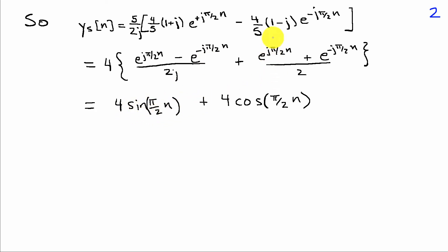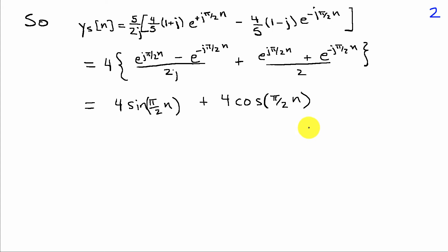Combining the imaginary terms, the j's cancel the j in the denominator, and we end up with (e^(jπ/2 n) + e^(-jπ/2 n)) / 2, which is just cos(π/2 n). So the steady-state response is 4 sin(π/2 n) + 4 cos(π/2 n). We started with a real-valued input, so we end up with a real-valued output, though complex arithmetic was needed along the way.